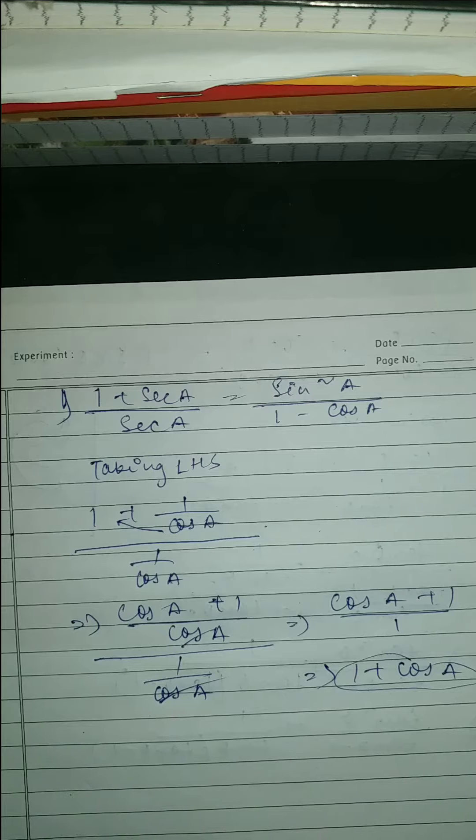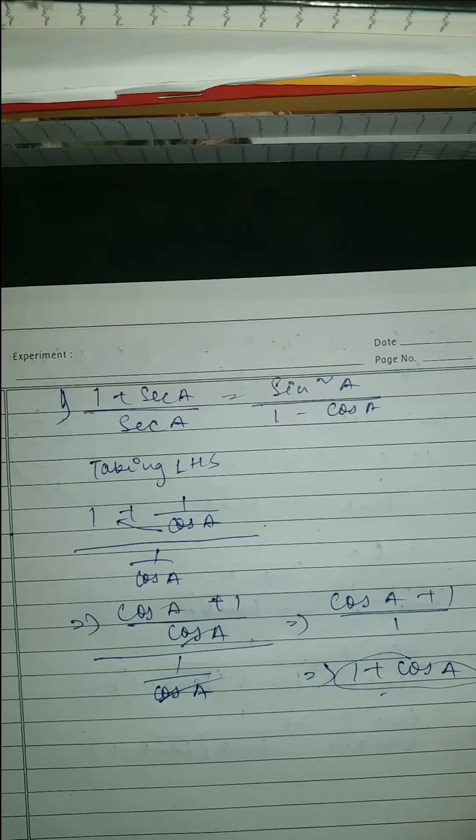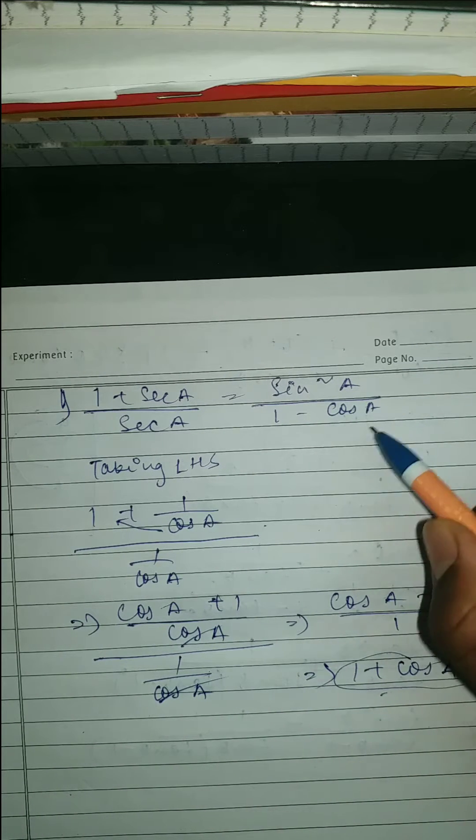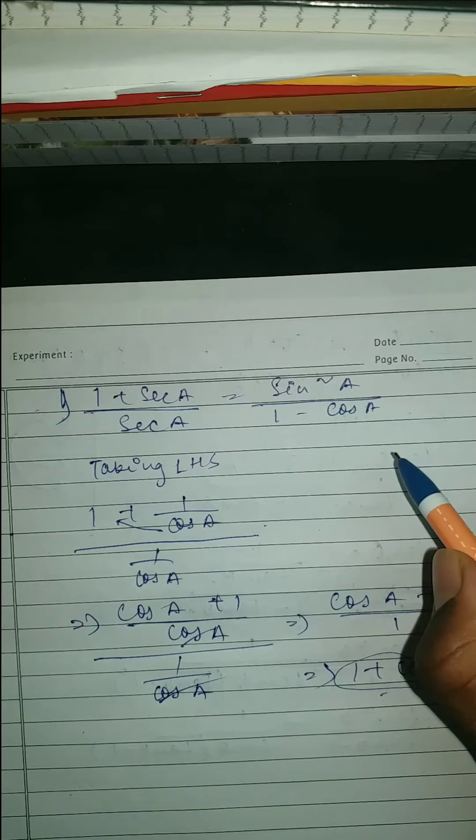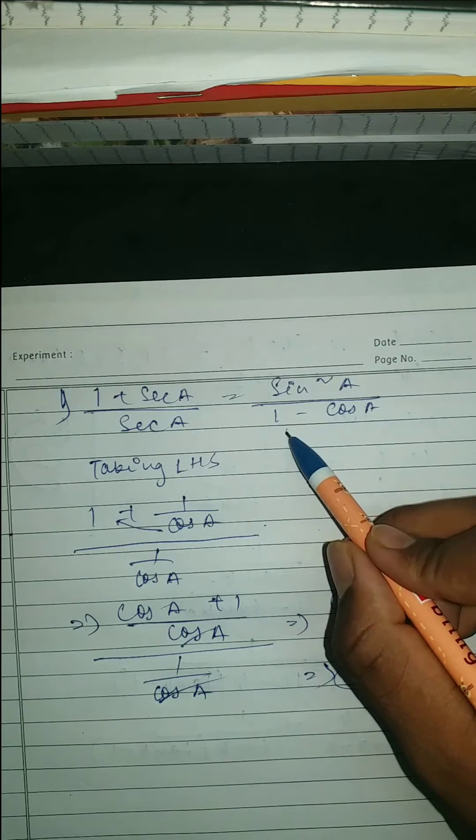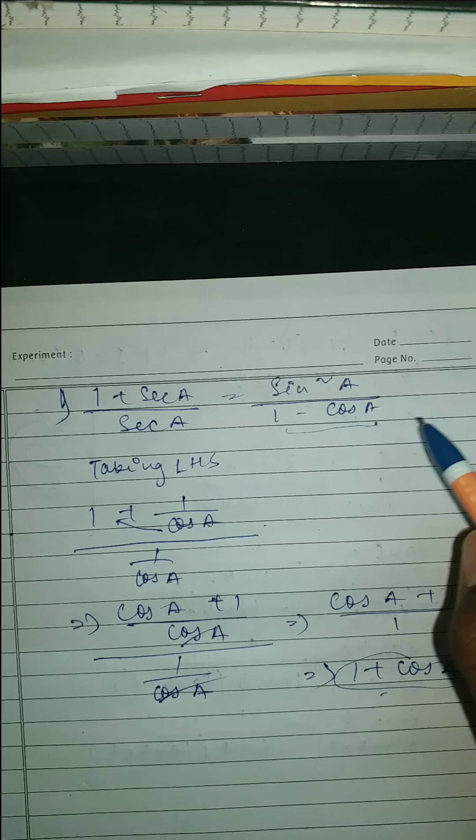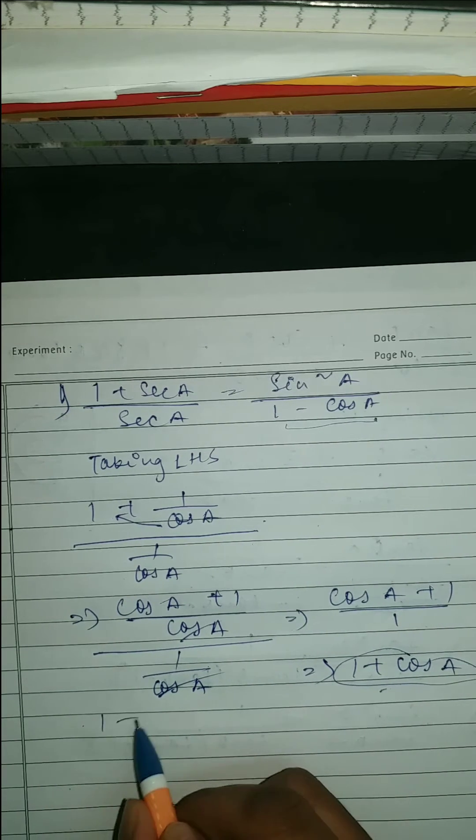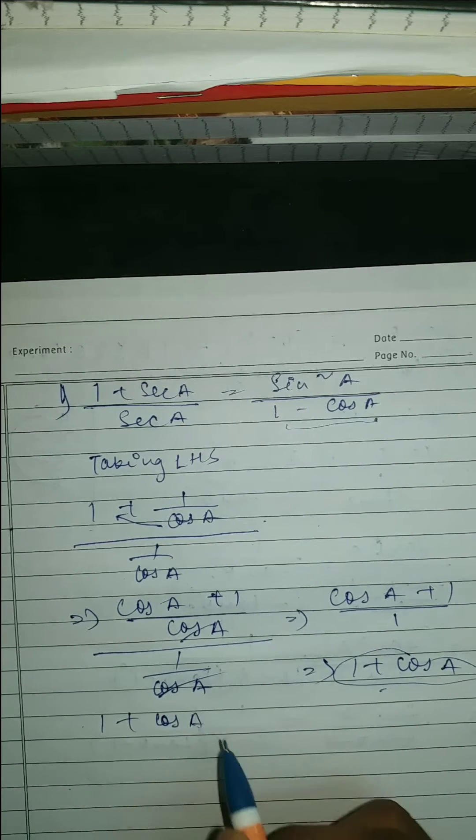Now we can't do anything from this. So we're going to take, we have to see the LHS, RHS. So here we can see that in denominator, RHS is 1 minus cos A. So what we're going to do, we're going to take this cos A,